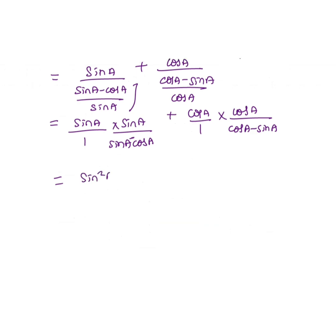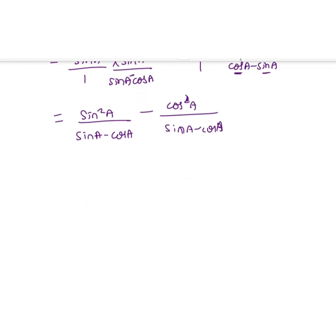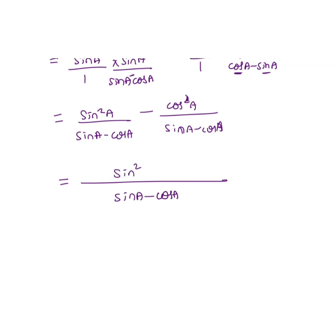This gives us sin squared A divided by (sin A minus cos A) plus cos squared A divided by (cos A minus sin A). Since the denominators are the same — noting cos A minus sin A is the negative of sin A minus cos A — we can take them as a common denominator and combine the numerators.